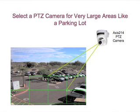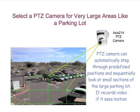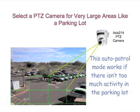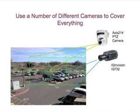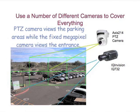You can select a pan-tilt zoom camera for very large areas like a parking lot. With a pan-tilt zoom camera, you can automatically step through predefined positions and sequentially look at small sections of a large parking lot. It records video if it sees motion. This Auto Patrol mode works if there isn't too much activity in the parking lot. If lots of things are moving, then you may miss something because the camera is facing in the wrong direction. You can use a number of different cameras to cover everything.